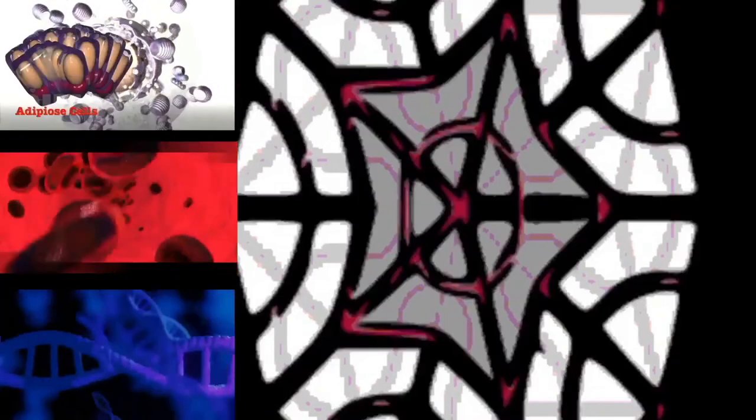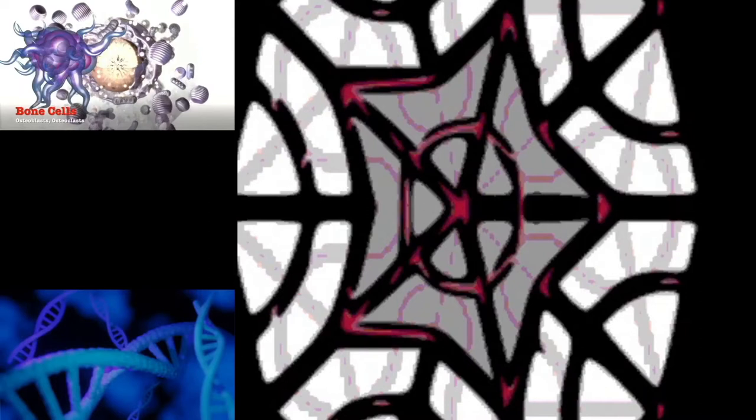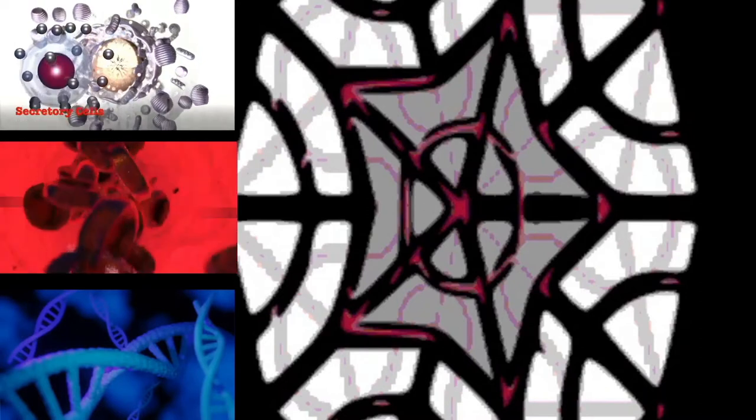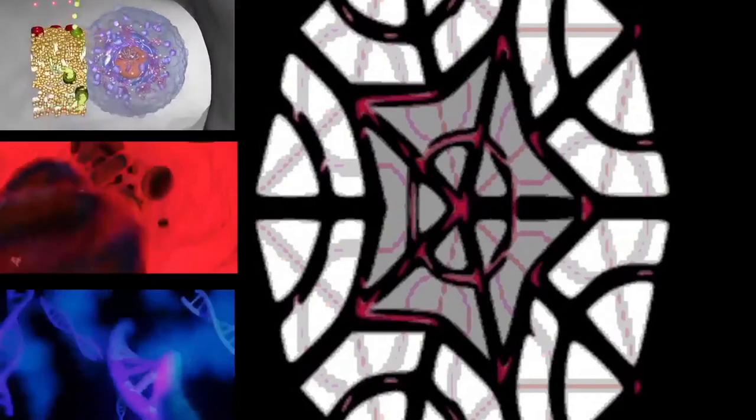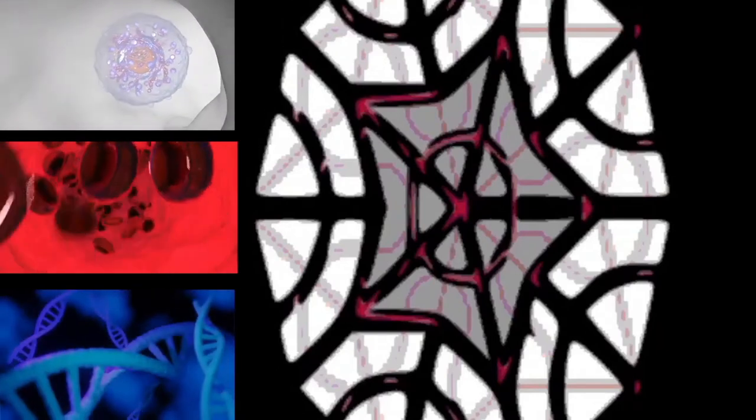Cocci: a bacterium that is spherical or ovoid is called a coccus, plural cocci, e.g., Streptococcus, Staphylococcus. Bacilli: a bacterium with a cylindrical shape called a rod or a bacillus, plural bacilli.